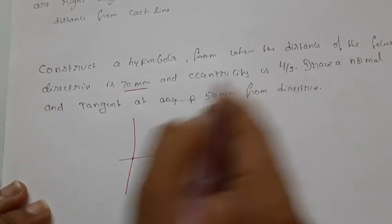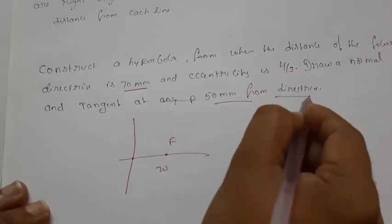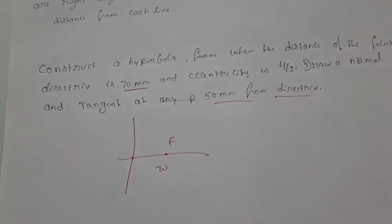Eccentricity is 4 by 3. Draw the normal and tangent at 50mm from the directrix, not 50mm from any point.